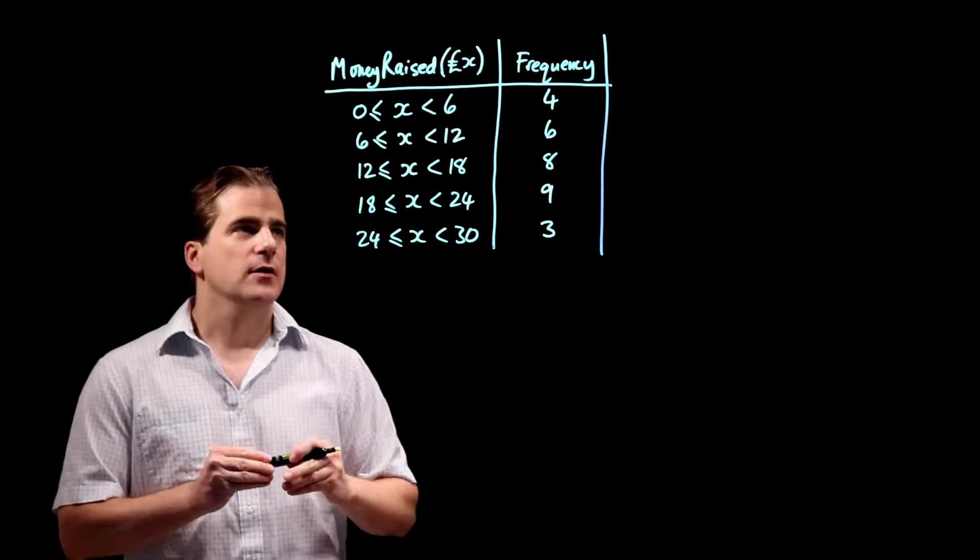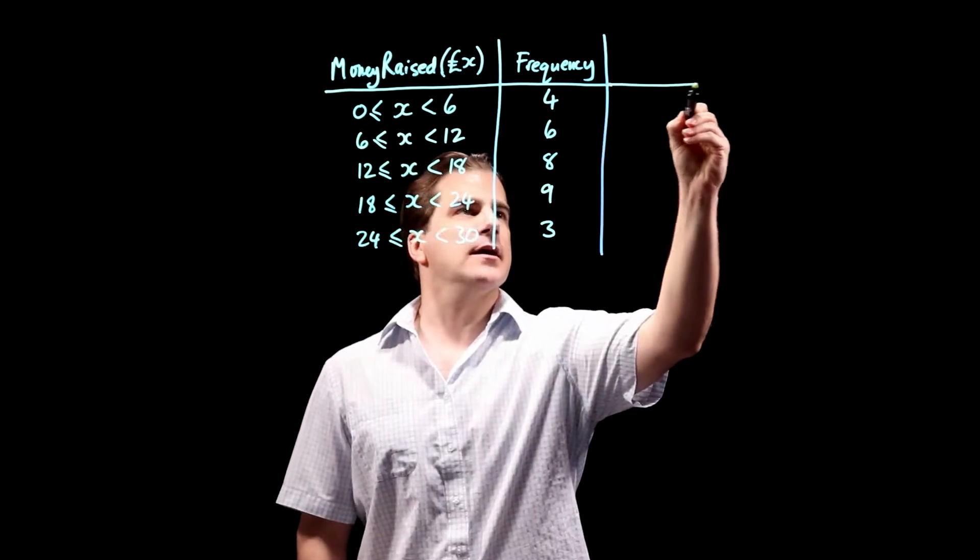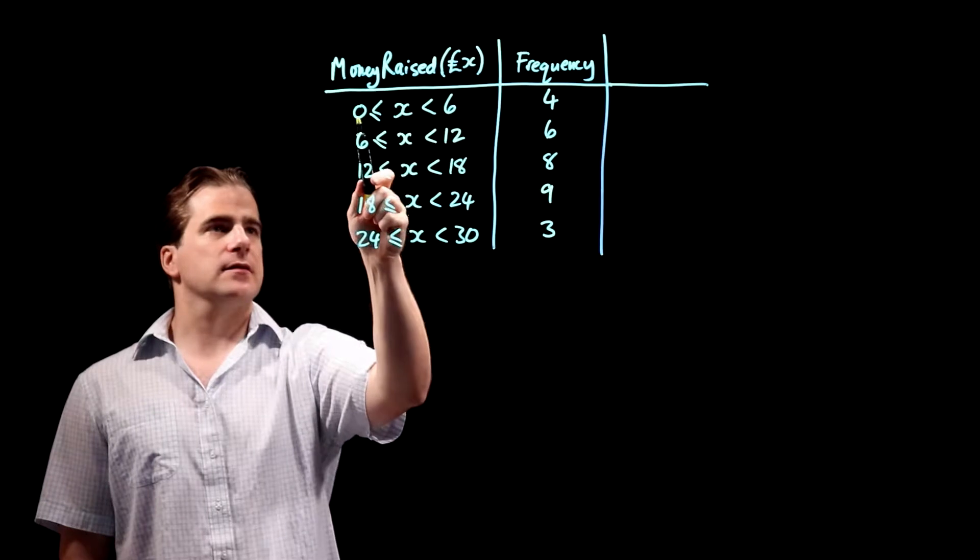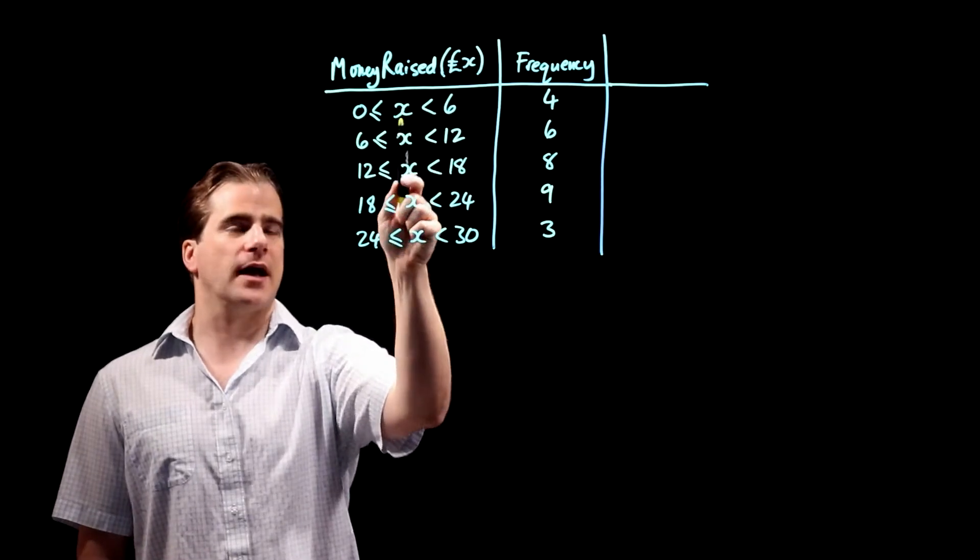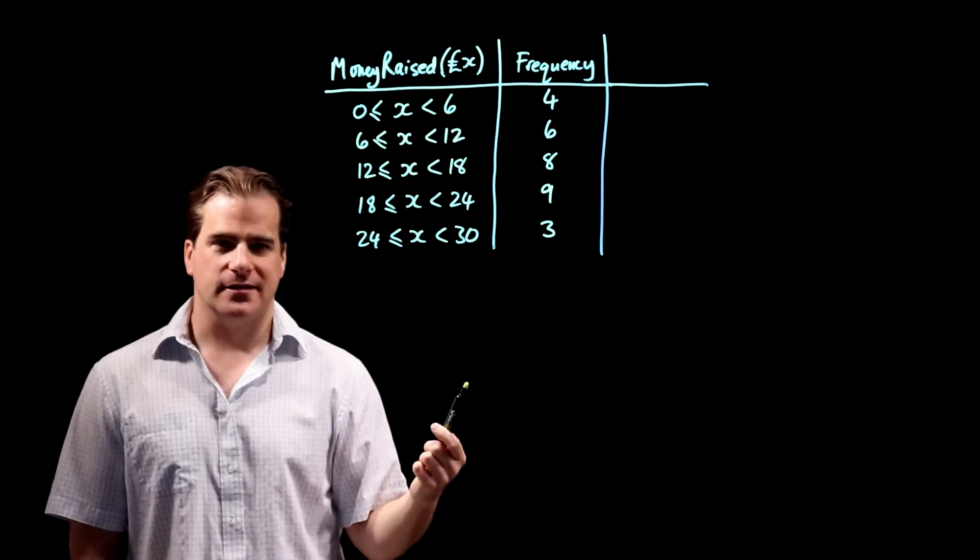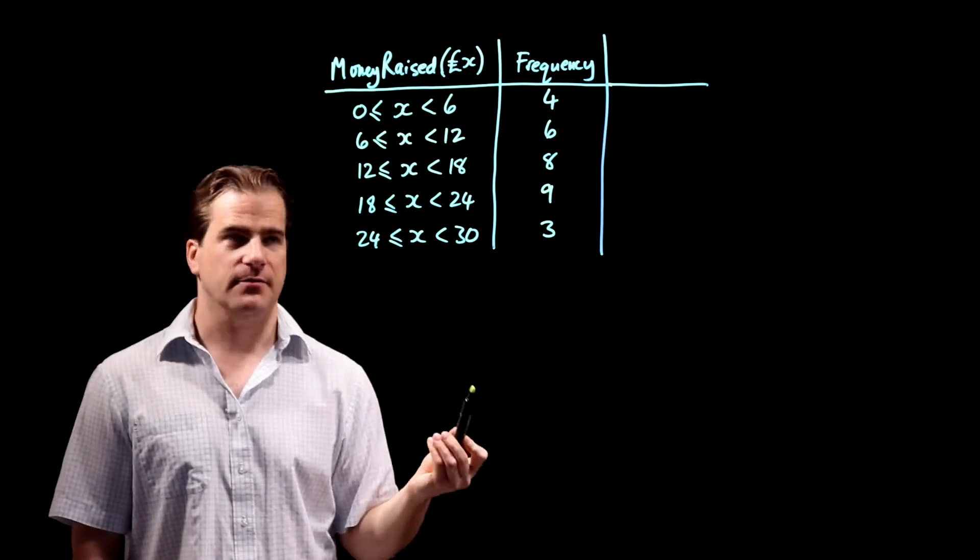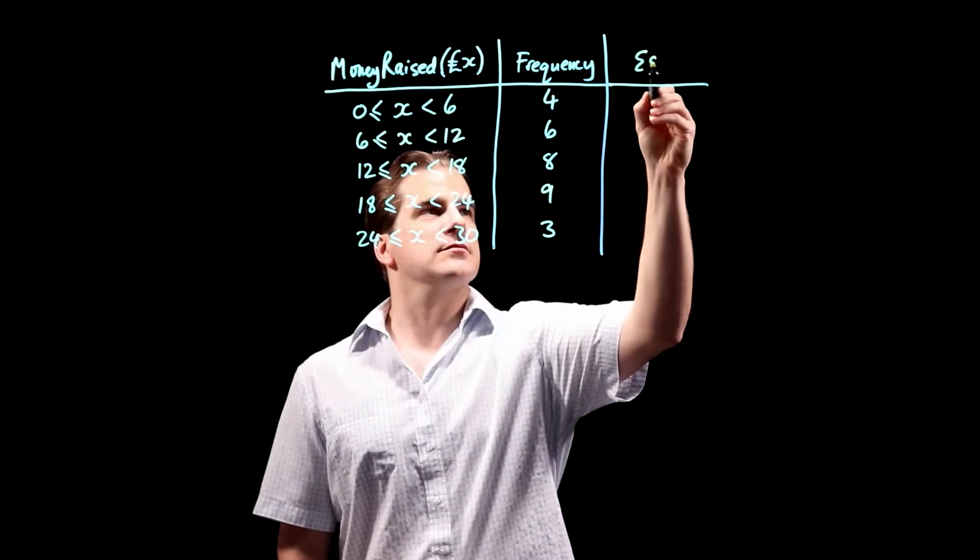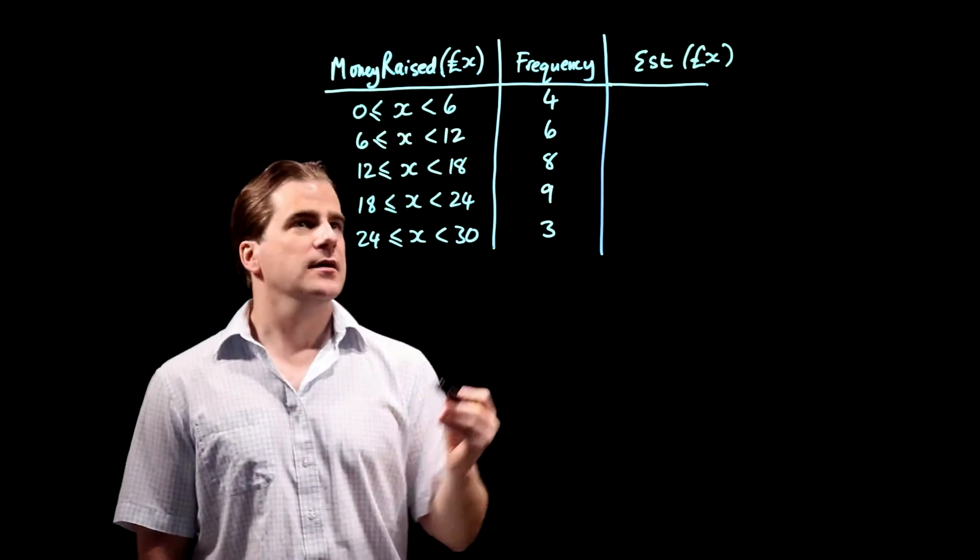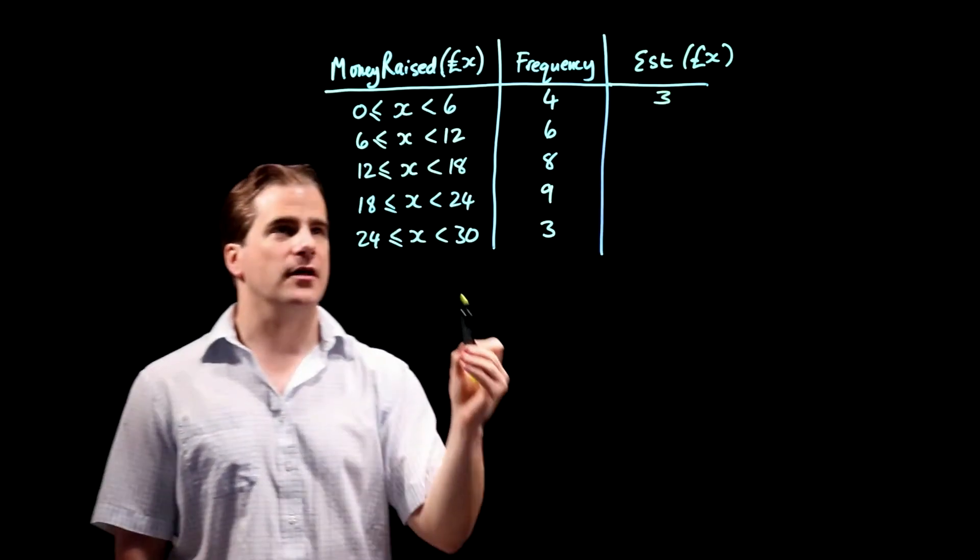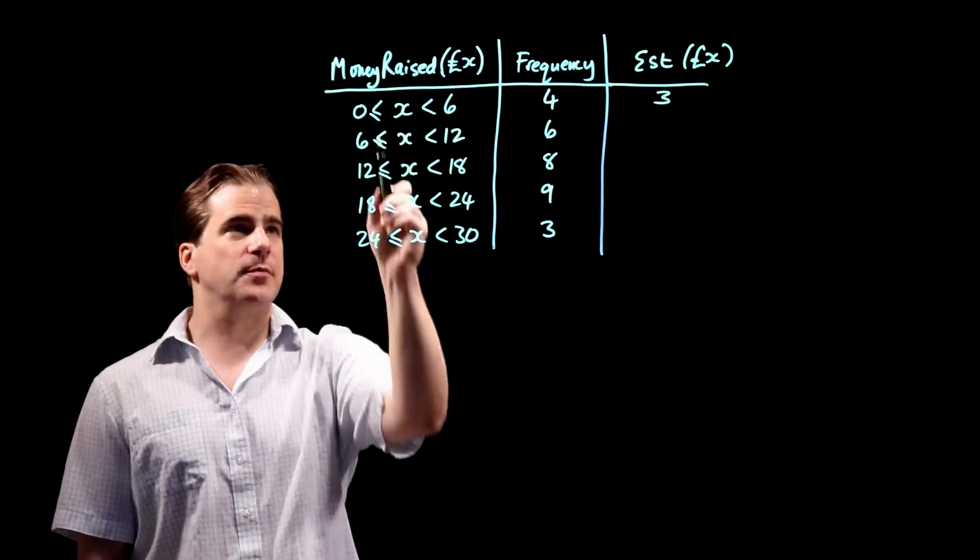So what you do, first thing is to introduce another column here, which is a sort of best guess or an estimate of what this value actually is. You guess or estimate that if x is between 0 and 6, it's actually 3. So I'll just call that estimate. So we're going to say that there are four people who each raised three pounds. You just pick the midpoint of these.